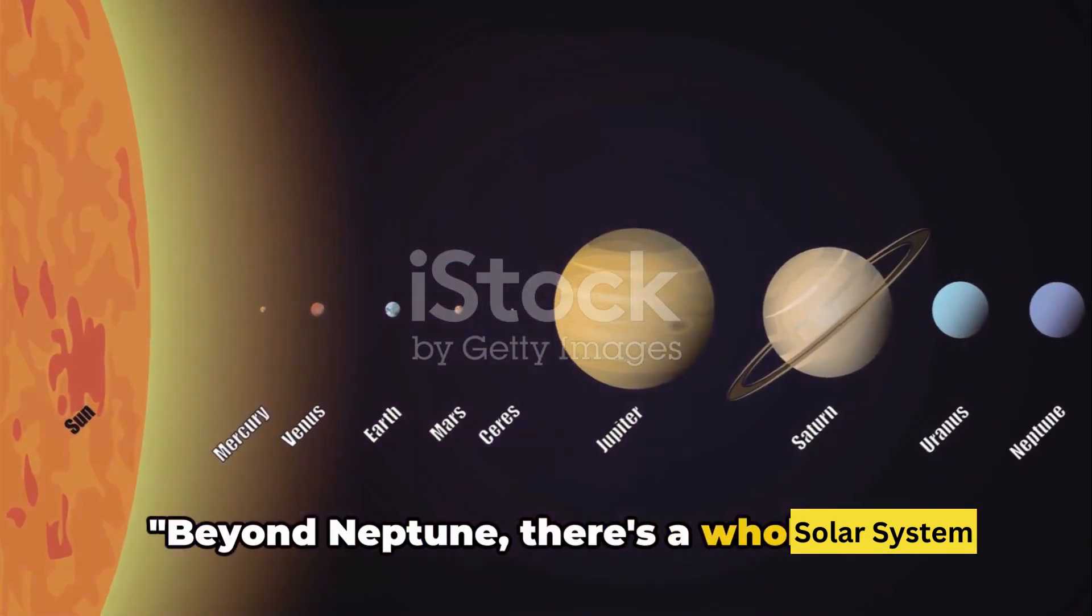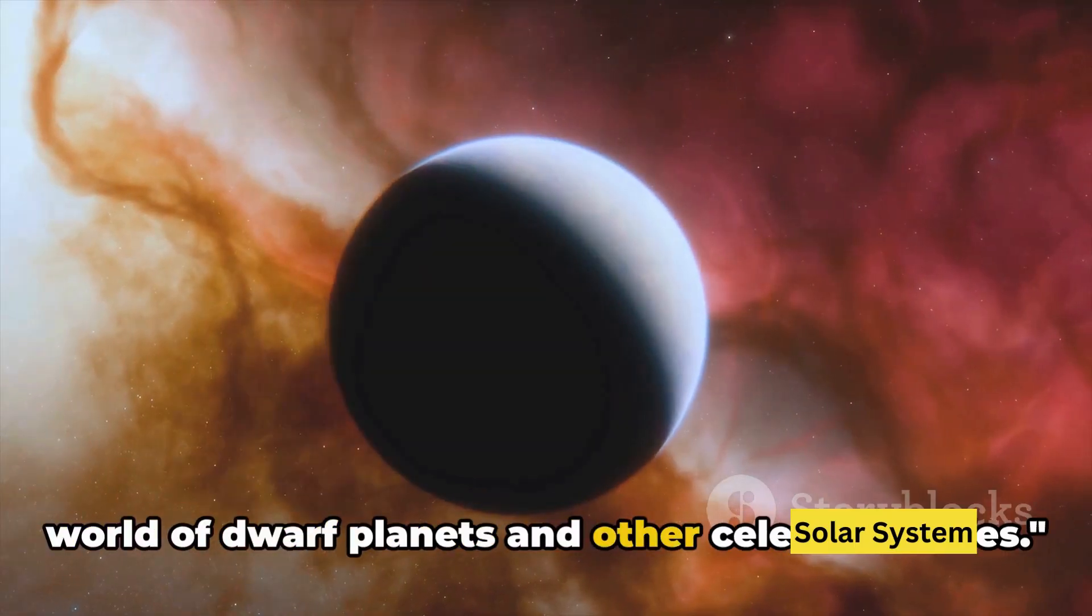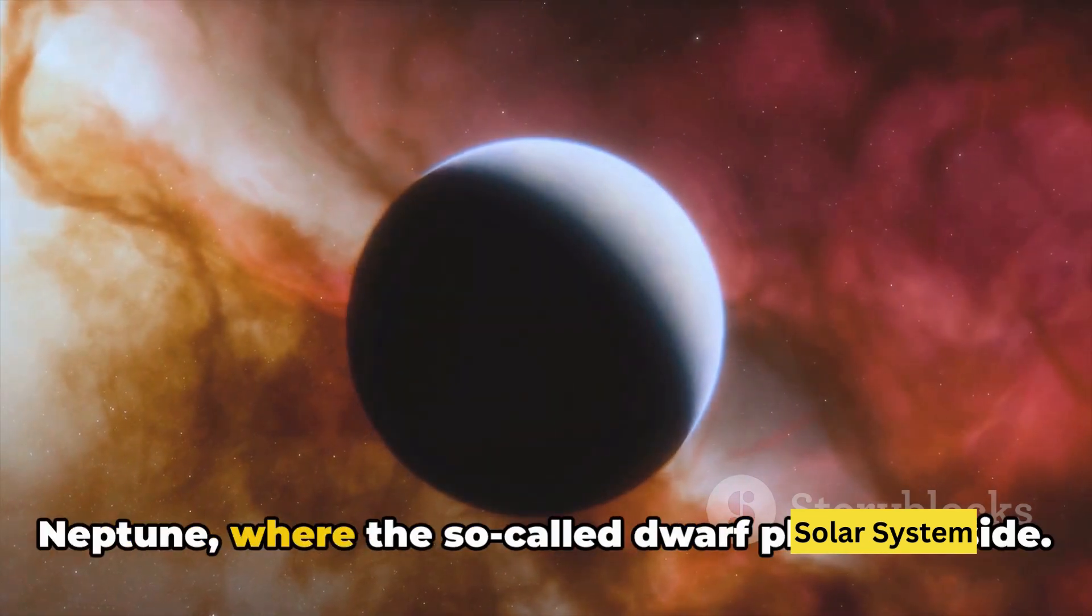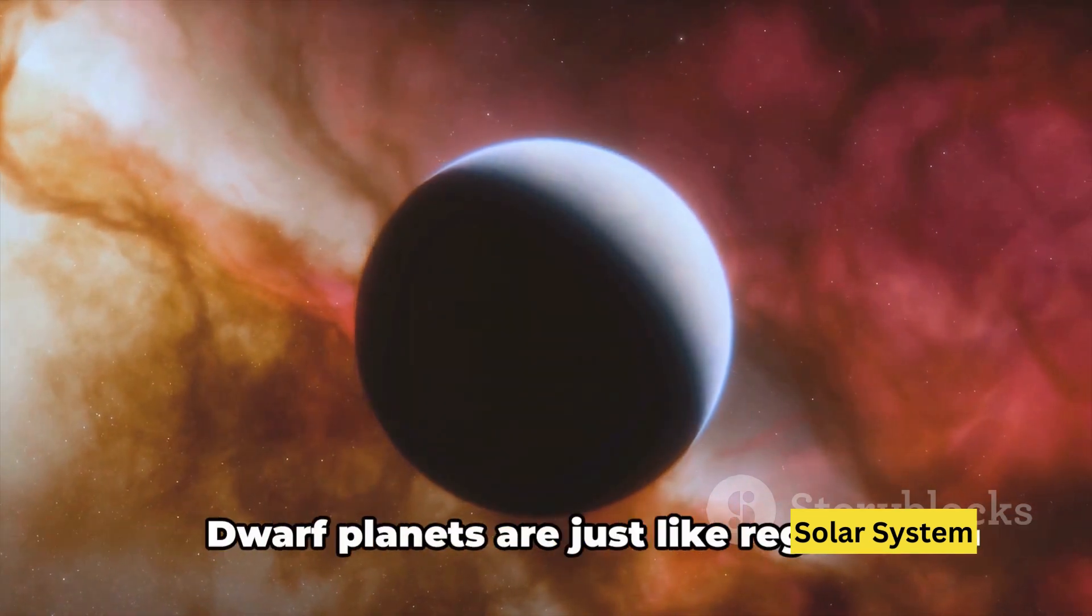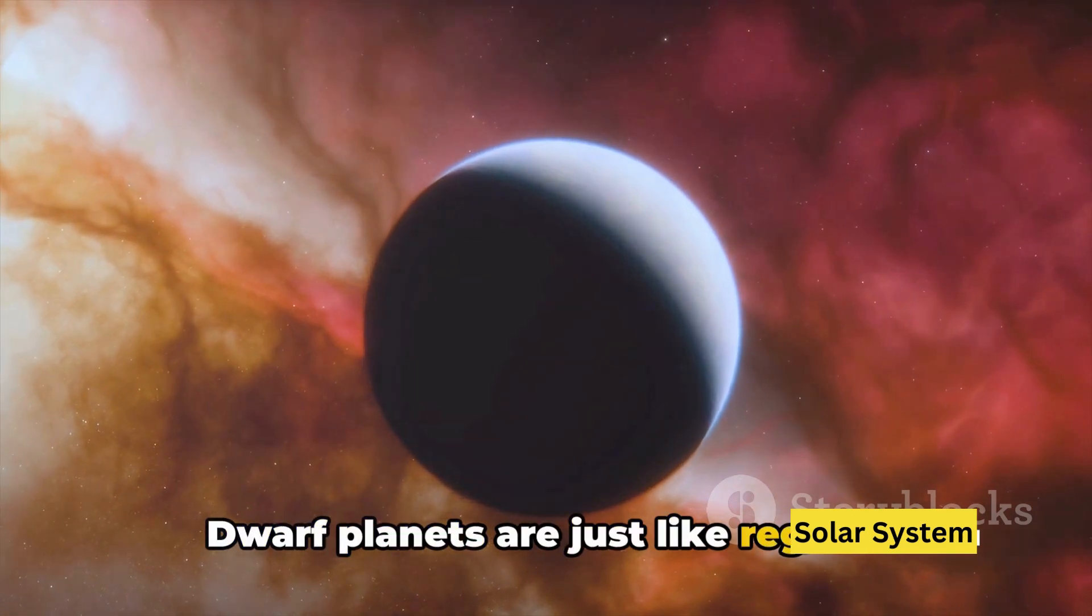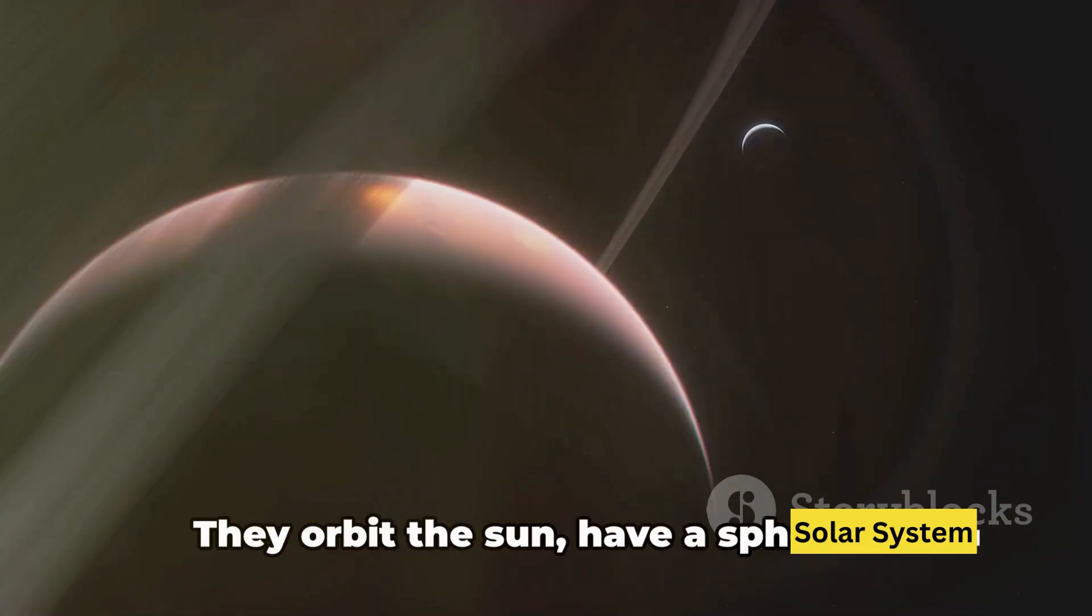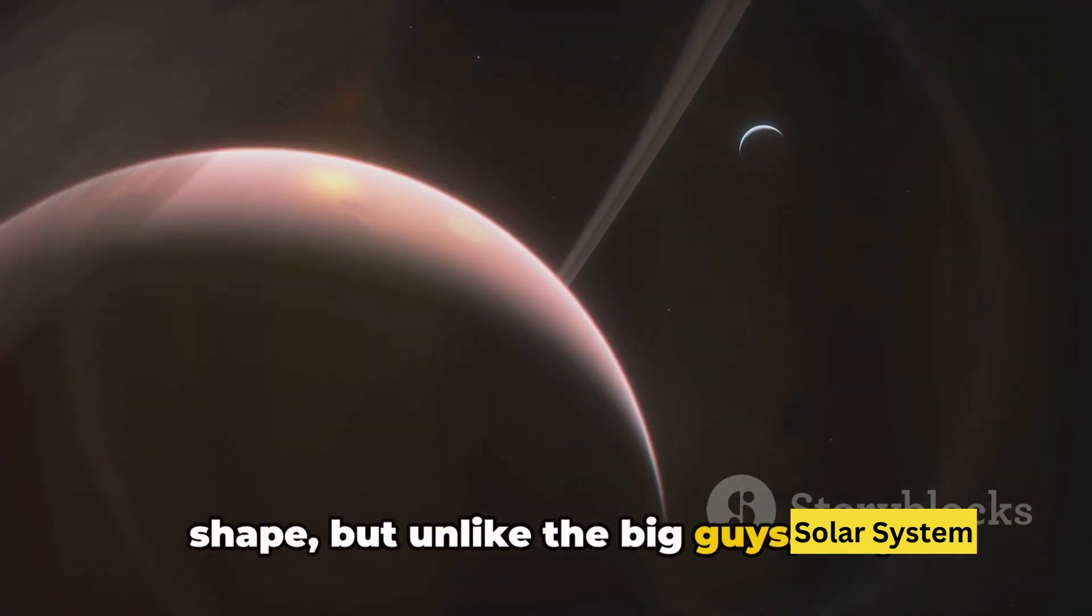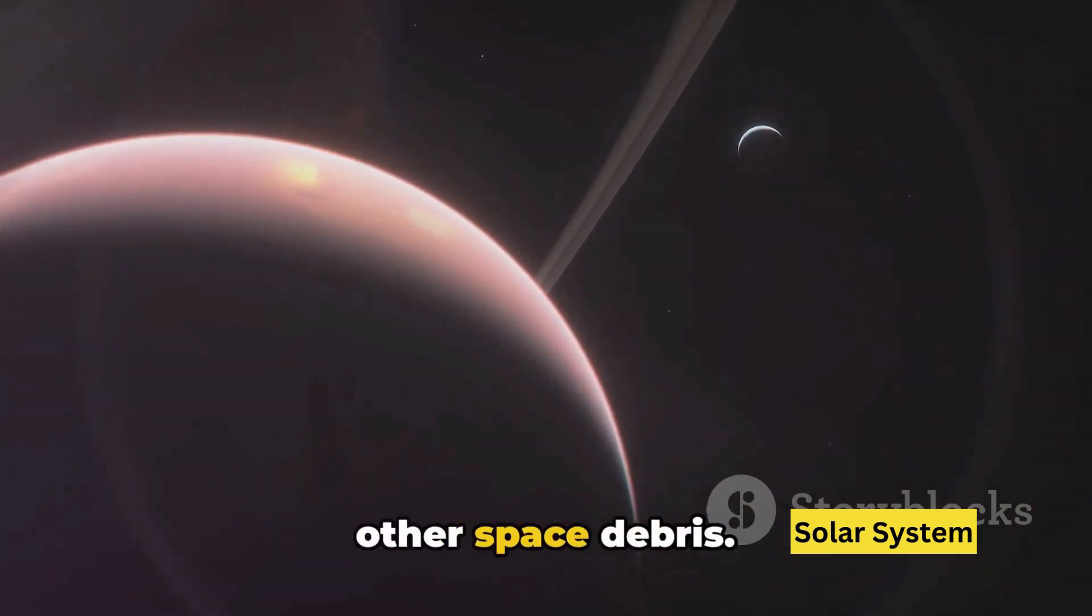Beyond Neptune there's a whole other world of dwarf planets and other celestial bodies. Let's now journey to the realm beyond Neptune where the so-called dwarf planets reside. Dwarf planets are just like regular planets but they're a bit smaller. They orbit the Sun, have a spherical shape, but unlike the big guys, they haven't cleared their neighborhood of other space debris.